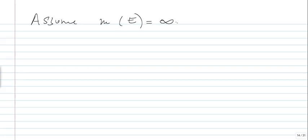When the measure of E is infinite, we can still do something very interesting. In order to understand the next result, assume back to finite measure. Using the Egorov theorem conclusion for every epsilon, let's take epsilon equal to 1/N for N greater than 1. You know that you will find a closed subset F_N such that the measure of E minus F_N is less than 1/N and F_k converges uniformly to F on F_N.